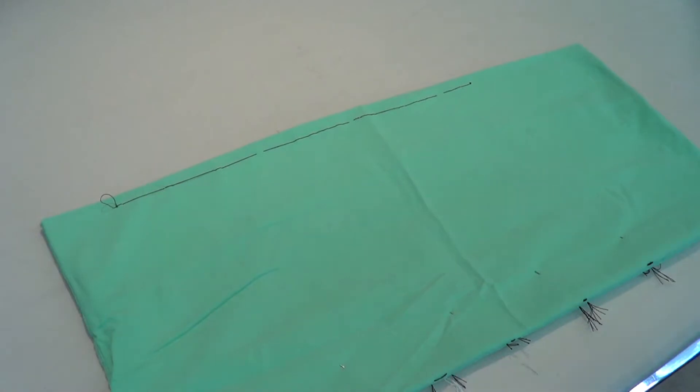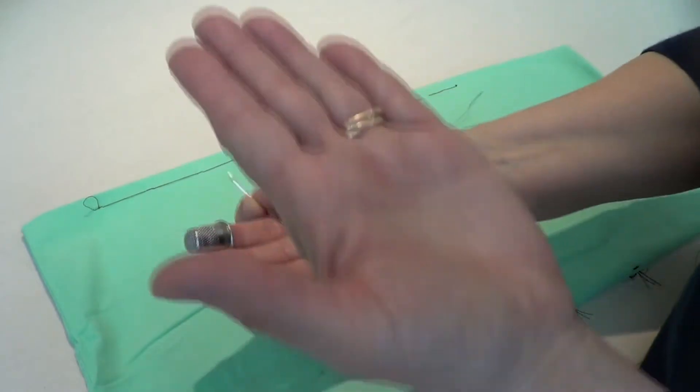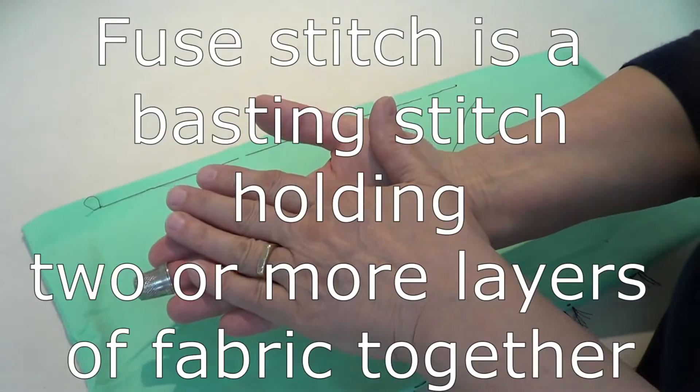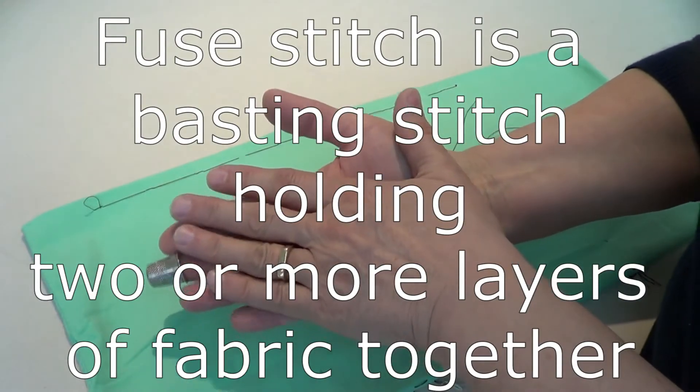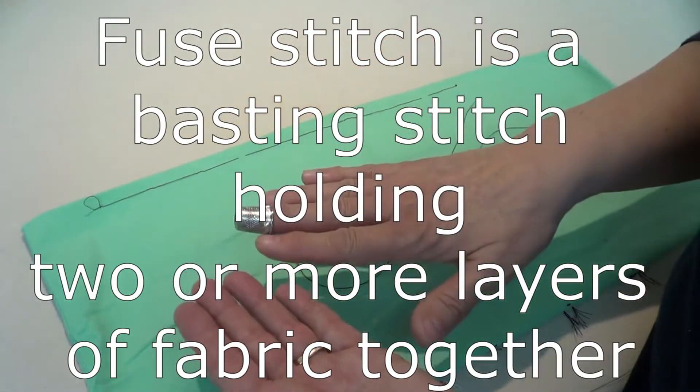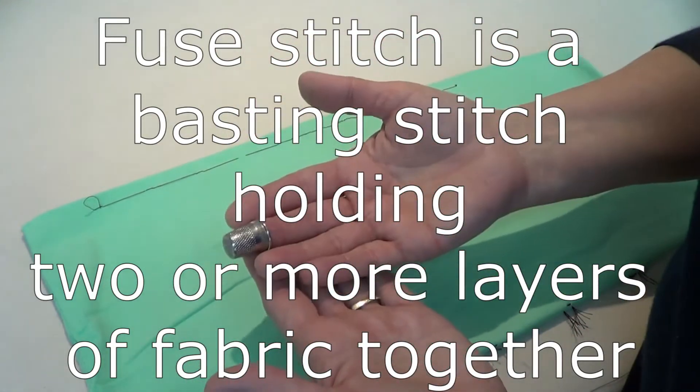So I'm going to show you a basting stitch, which means it's a temporary stitch. This stitch is meant to connect two or more layers of fabric together, and most often in couture it's used for a temporary reason, and the other reason is that it's used permanently in tailoring.